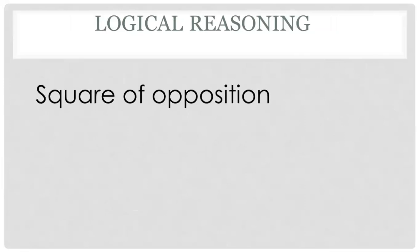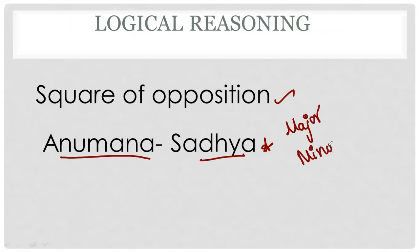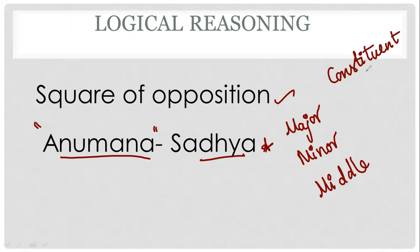Logical reasoning is a very important unit. Every day in the question paper, across three-fourths — in the six shifts, six question papers — there are square of opposition questions. That's why we discuss Western logic: major term, minor term, middle term. We discuss these three terms. Equivalent, anumana — which is a question in this same pattern. That is the constituent of anumana.